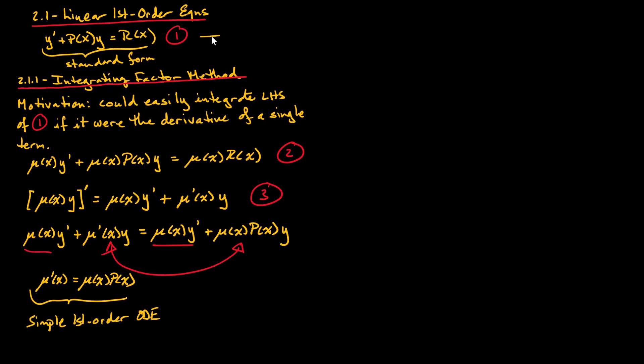Let's recap what we've done. We have a linear first order ODE. We can't integrate it directly, but we could if we could recast the left-hand side as the derivative of a single product — because then we can integrate directly. Using the product rule gives us two terms. Comparing equation 3 and equation 2, for that equality to hold we need the derivative of the unknown function mu prime to equal the function itself multiplied by p of x, which is the coefficient of the y term in our standard form equation.